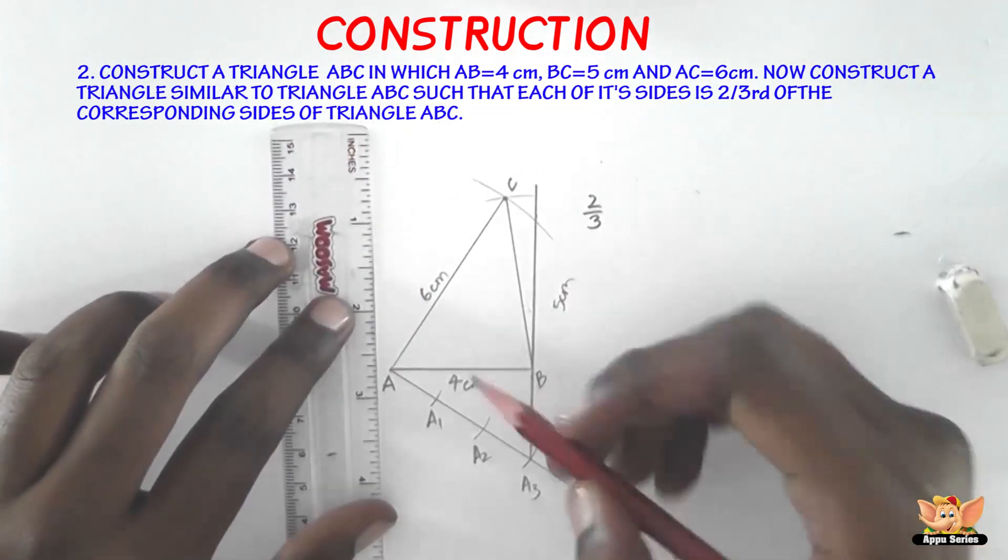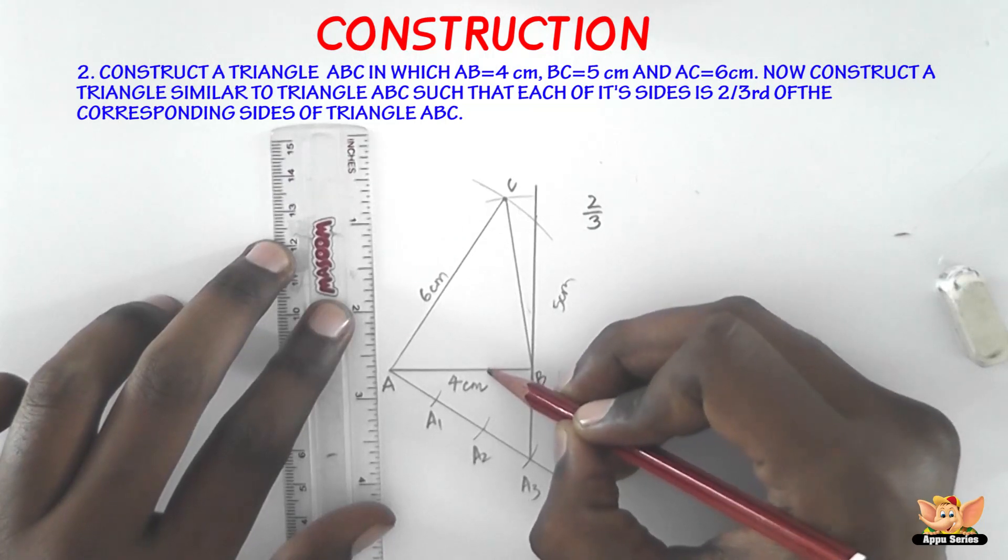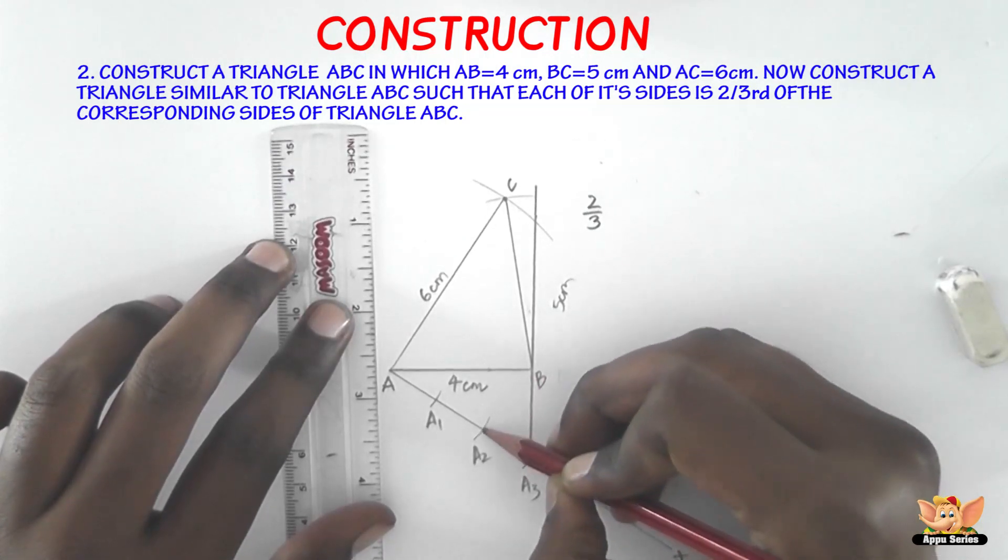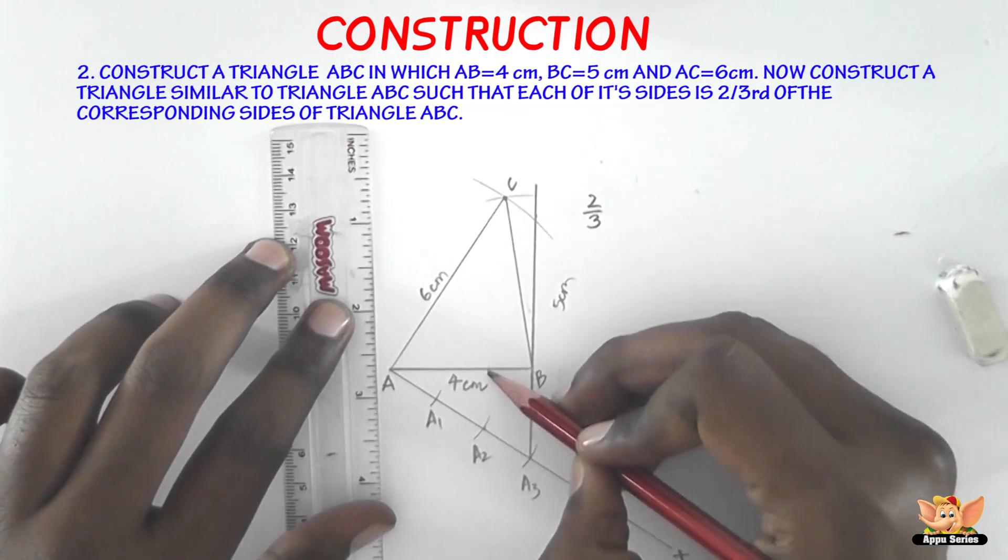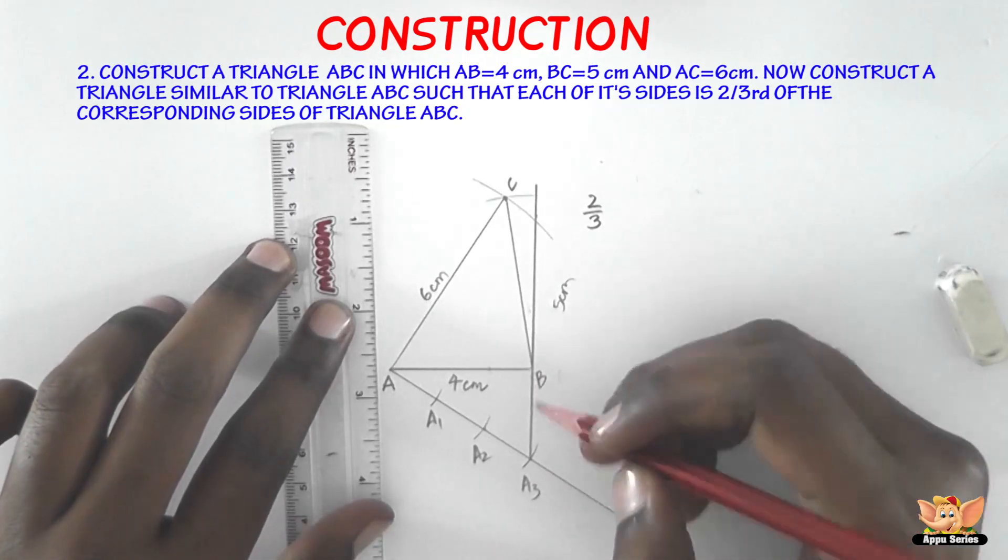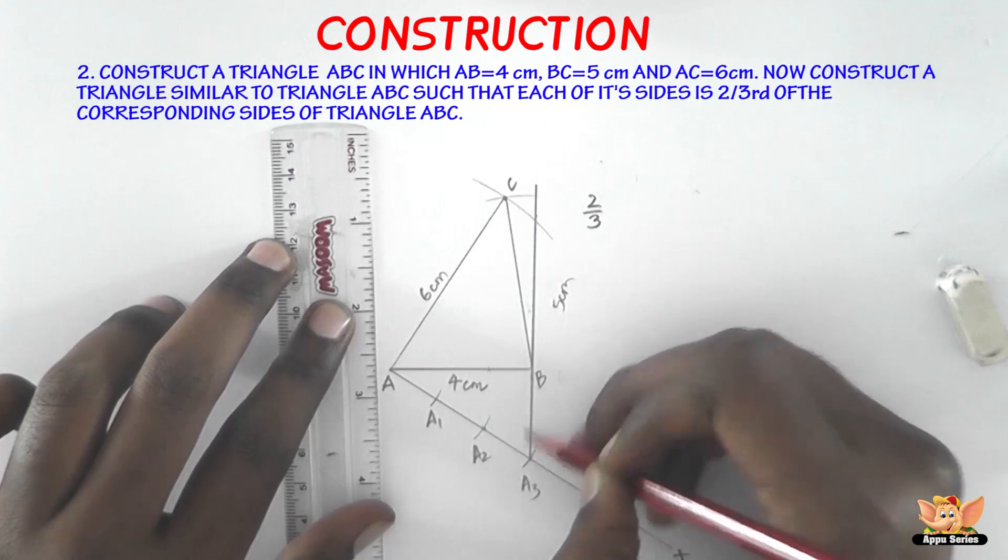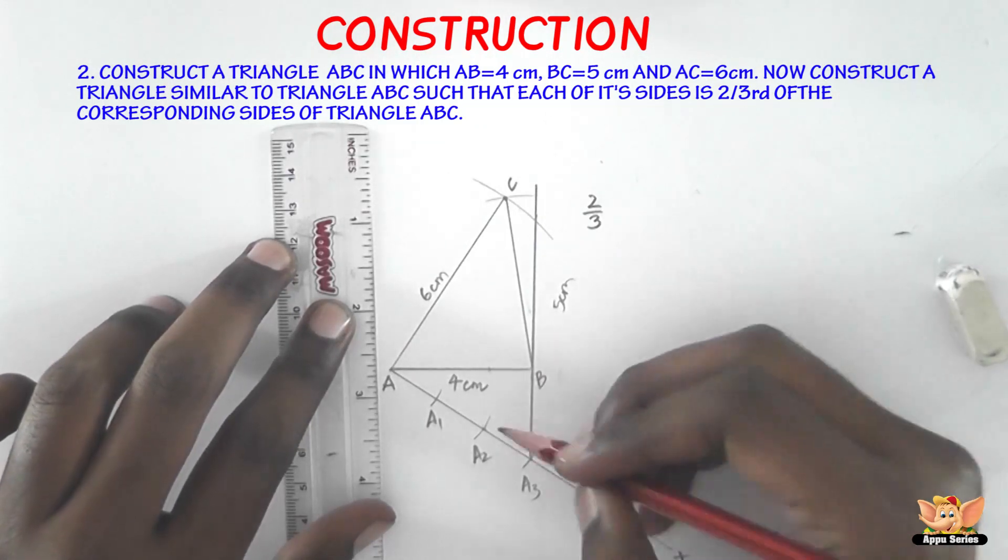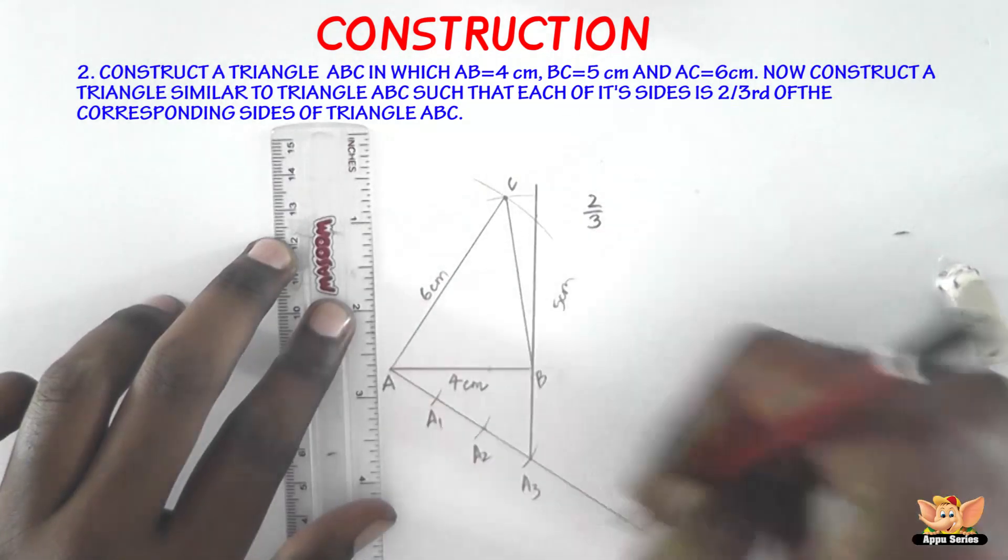Now the next step is to construct A2B'. B' is going to come on this line. Just draw a line here, join A2 and this line such that A2B' is parallel to A3B. So in order to make the line A2B' parallel to A3B, this line should be in the same angle as BA3 is with AX.